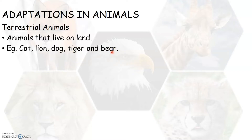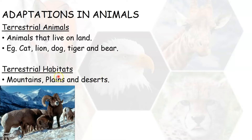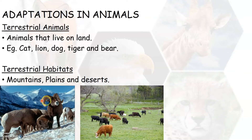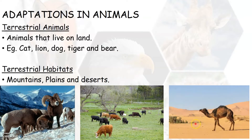We have already learned about terrestrial habitats of plants. Now let us learn about the terrestrial habitats of animals. The terrestrial habitats of animals are, as you see here, mountains, plains, and desert regions. Now let us learn about each of these terrestrial habitats one by one.